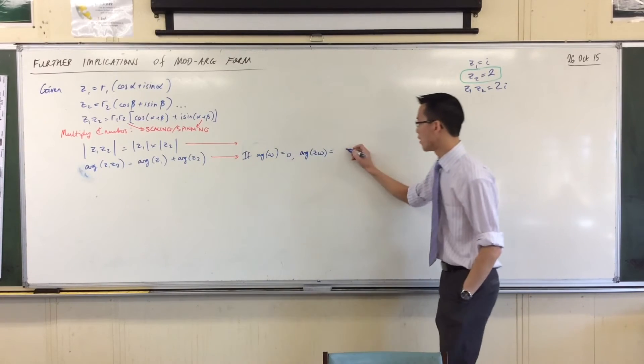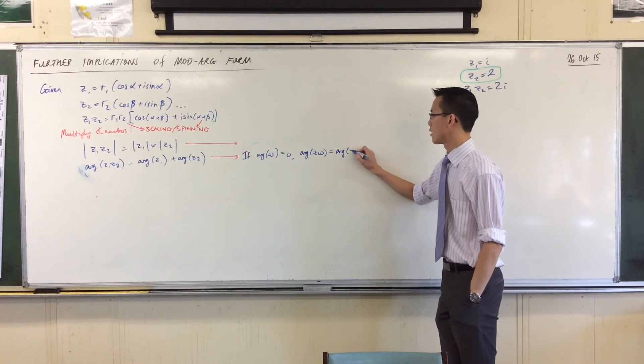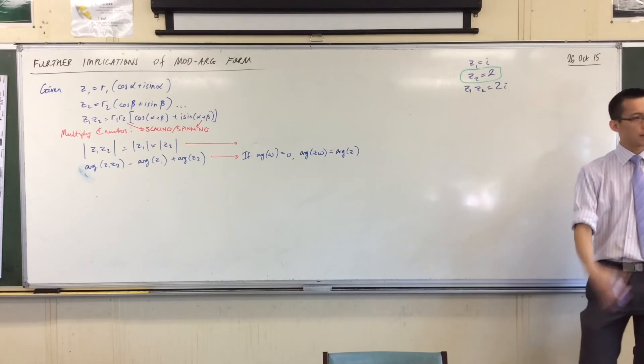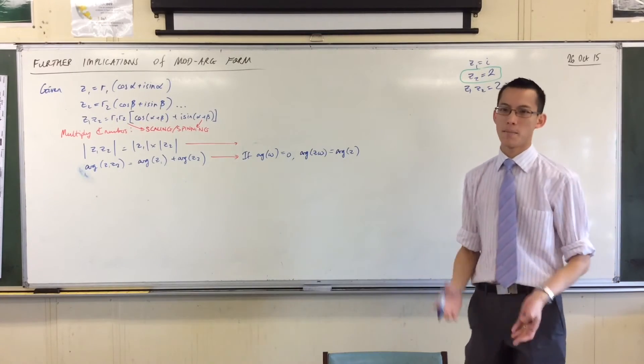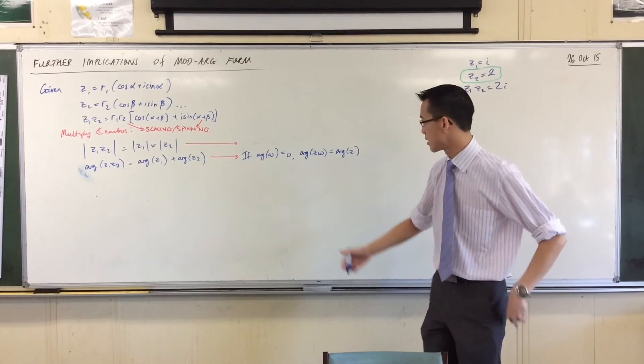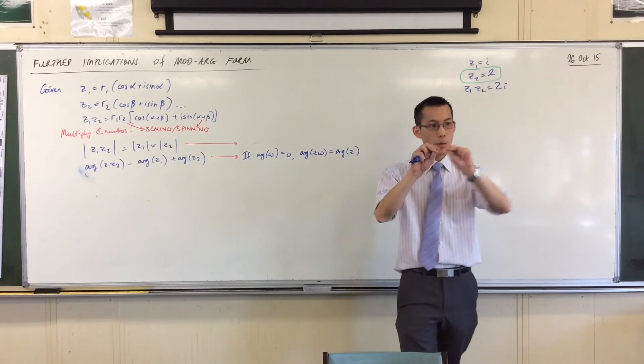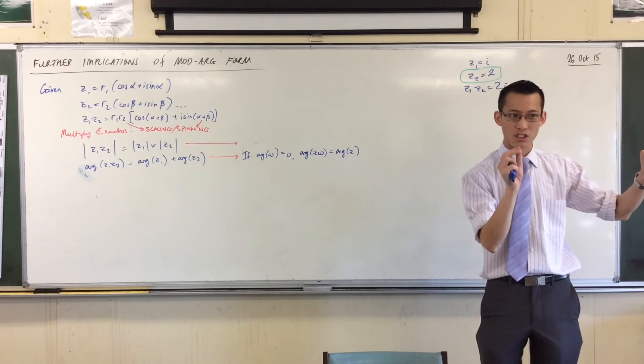What does it mean? What kinds of numbers, there's a whole family of numbers that has an argument of zero. Where are they? Like choose one of them. It's the real numbers, but more specifically it's not just the real numbers, there are only some. It's going to be the positive ones.